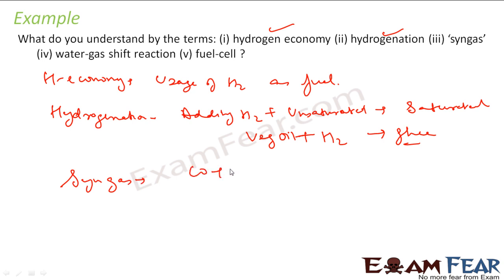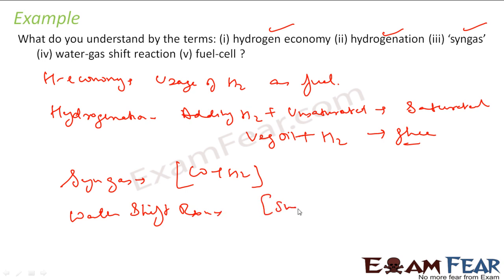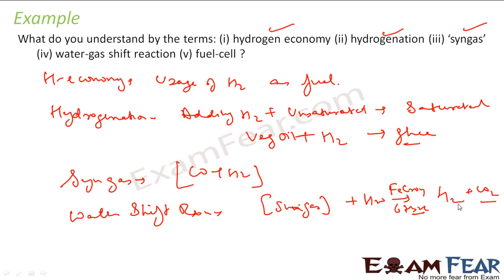Syngas is CO plus H2 — this is synthesis gas, also called water gas. It is formed by various methods using coal, sewage, and similar materials. If it is produced from coal, the process is called coal gasification. The water shift reaction: from syngas, you oxidize with steam in the presence of iron chromate catalyst at 673 K to get more hydrogen and carbon dioxide. So you get more and more hydrogen from syngas by the water shift reaction.